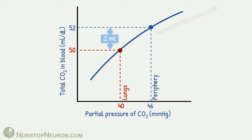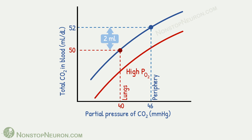This suggests that 2 ml of carbon dioxide is released per 100 ml blood. However, at lungs, partial pressure of oxygen is high. As we have just seen, oxygen causes release of more carbon dioxide. So higher partial pressure of oxygen shifts the curve to a new position — this shift is nothing but the Haldane effect. In this shifted curve, 40 mmHg corresponds to 48 ml carbon dioxide per 100 ml blood, suggesting an additional 2 ml — or total 4 ml — of carbon dioxide released at lungs. Thus, the Haldane effect almost doubles the amount of carbon dioxide released at lungs.